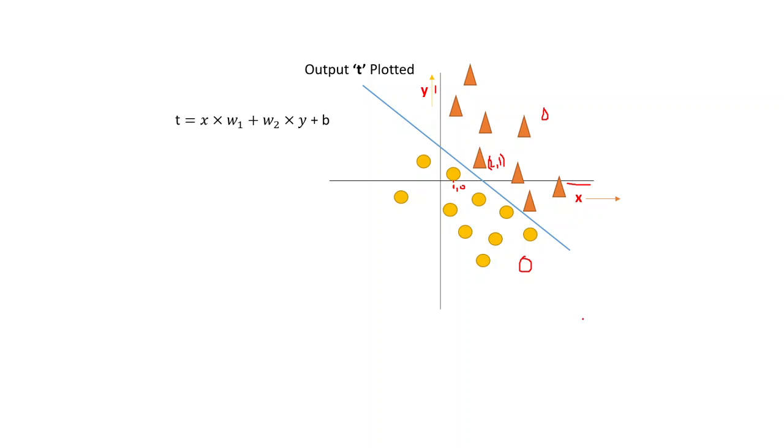This is how a single layered perceptron tries to do its prediction. This is just a straight line which is drawn to separate triangle from the circle.